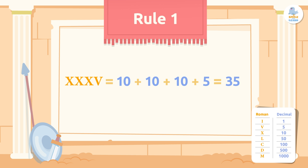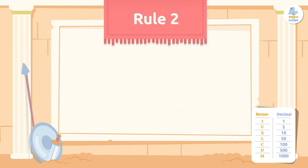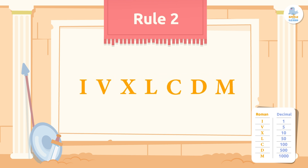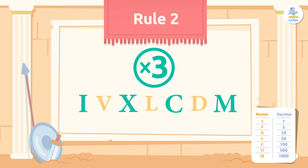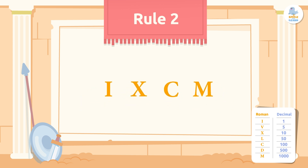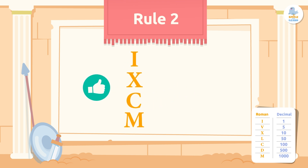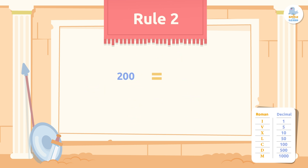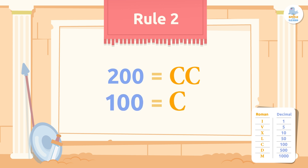Rule 2: you can repeat some letters up to three times in the same numeral, but others cannot be repeated. The letters that can be repeated up to three times are I (1), X (10), C (100), and M (1,000). For example, to write the number 200 we use two C's — since C has a value of 100, adding both letters gives us 200.